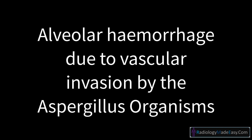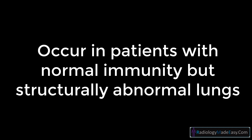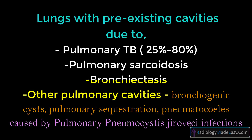Histologically, the ground glass likely represents alveolar hemorrhage due to vascular invasion by Aspergillus. Aspergillomas are mass-like fungus balls typically composed of Aspergillus fumigatus, and represent a non-invasive form of pulmonary aspergillosis. Aspergillomas occur in patients with normal immunity but structurally abnormal lungs — specifically, lungs with pre-existing cavities.